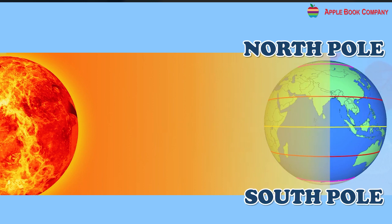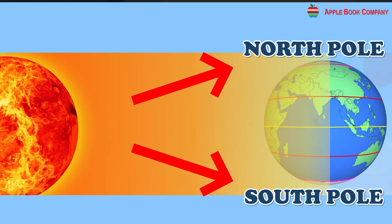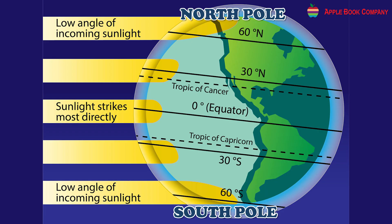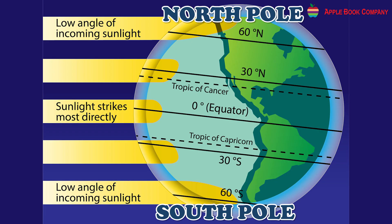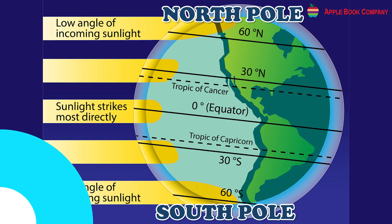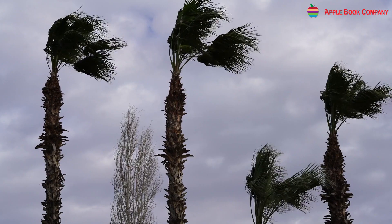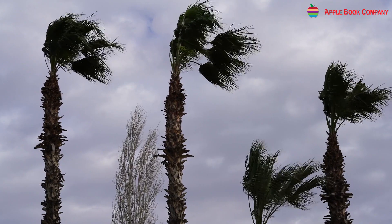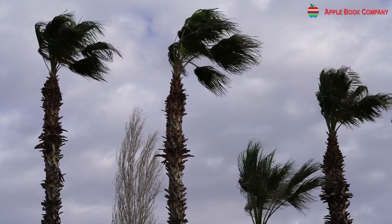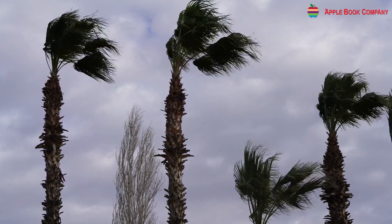The poles receive slanted sunlight, which is less intense and spread over a larger area. As a result, areas near the poles are less hot.